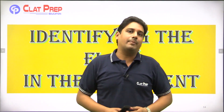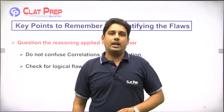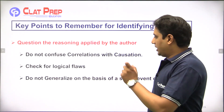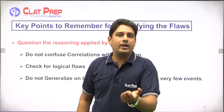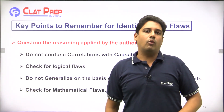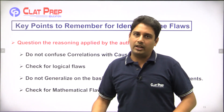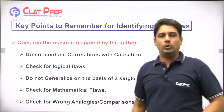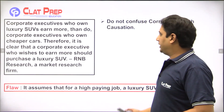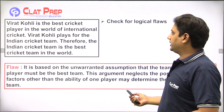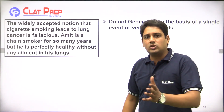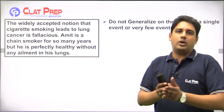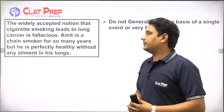In this video, let's talk about the generalization on the basis of a single event or few events. Then we will move on to mathematical flaws, and then we will move on to wrong analogies. We have already taken two examples; the third one is: do not generalize on the basis of a single event or few events. What is it? Let's see an example.